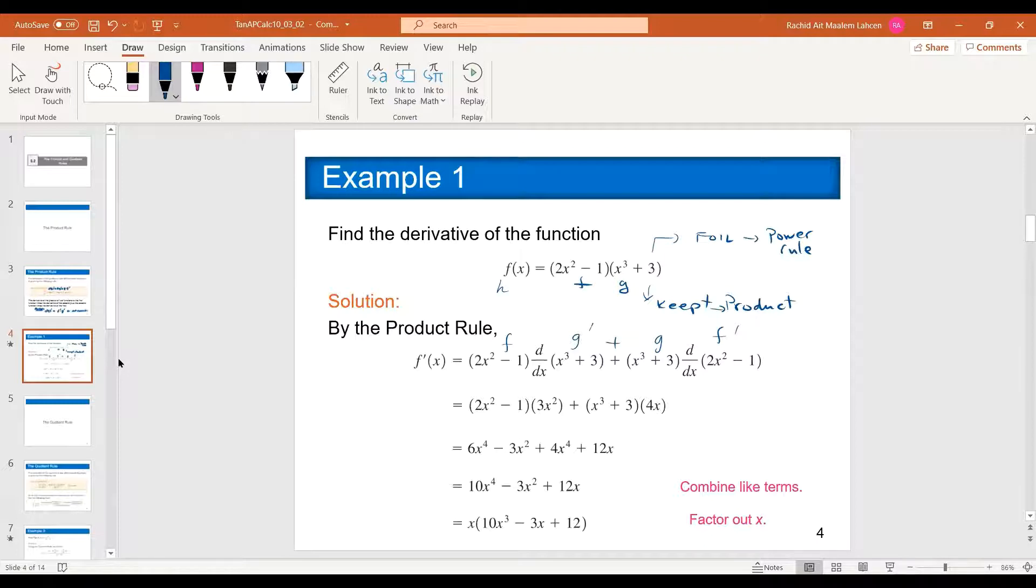The first f is 2x squared minus 1, g prime is this, you write it down, then you do g prime, the power rule, 3x squared, and plus 3 is 0, derivative is 0. And now g is that. The derivative of this one again is 4x minus 1, derivative is 0. You have to see the 3.1 before, so you need to watch 3.1 before 3.2.